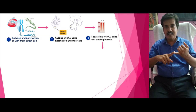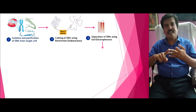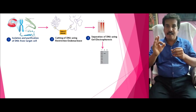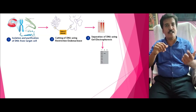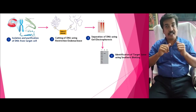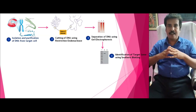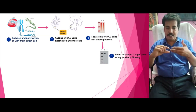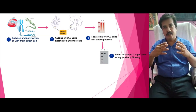So the first step is isolation and purification of DNA, the second is cutting the DNA, and the third step is separation of DNA by gel electrophoresis. The fourth step, which is very important, is identifying the gene of interest. For example, if I want to produce insulin in large quantities, I need the gene coding for insulin. The gene of interest can be identified with the help of a technique called Southern blotting, developed by Edwin Southern.